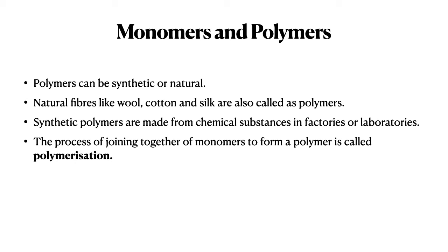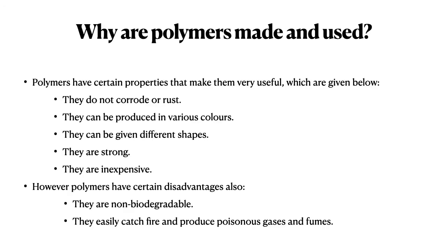Polymers can be synthetic or natural. Natural fibers like wool, cotton, and silk also come under polymers. The basic difference is that synthetic polymers are made in laboratories or factories, while natural polymers are made by nature. The process of joining multiple monomers together to form a single polymer is called polymerization.